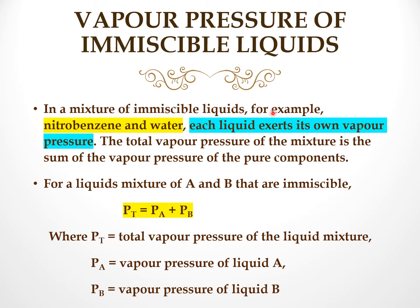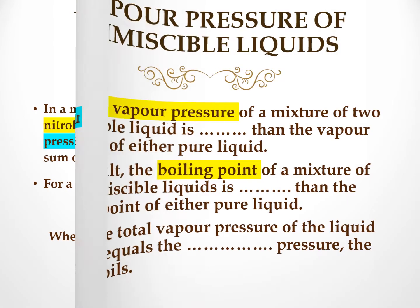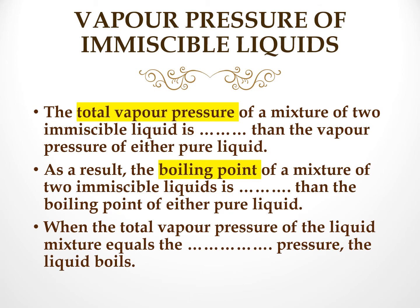In a mixture of immiscible liquids, for example, nitrobenzene, benzene, and water, each liquid exerts its own vapour pressure. The total vapour pressure of the mixture is the sum of the vapour pressures of the individual components. For a liquid mixture of A and B that are immiscible, the total vapour pressure equals the vapour pressure of liquid A plus the vapour pressure of liquid B. The total vapour pressure of a mixture of two immiscible liquids is higher than the vapour pressure of either pure liquid. As a result, the boiling point of a mixture of two immiscible liquids is lower than the boiling point of either pure liquid.